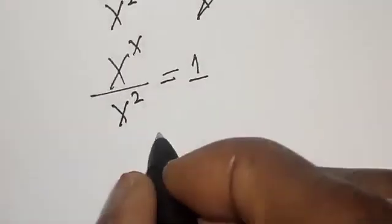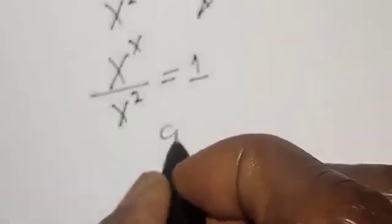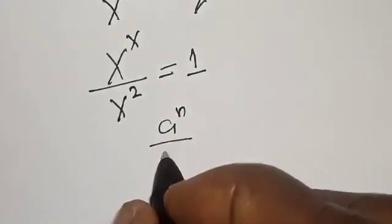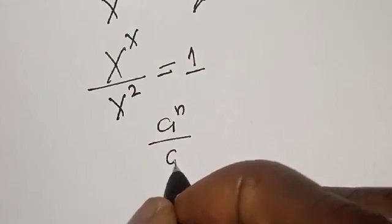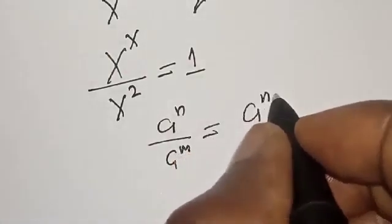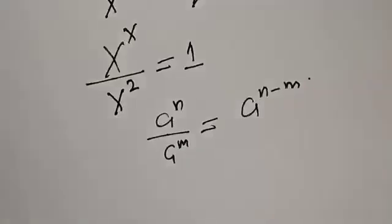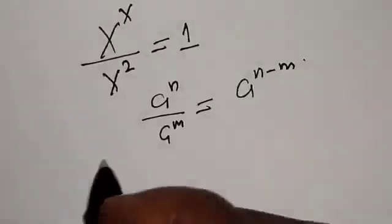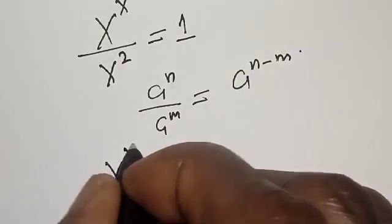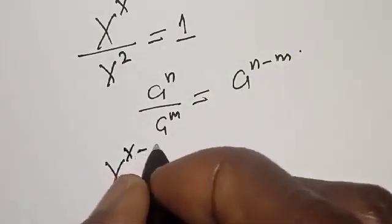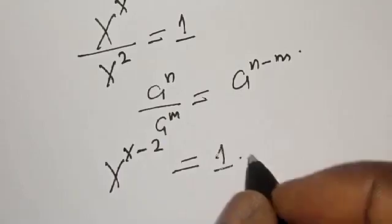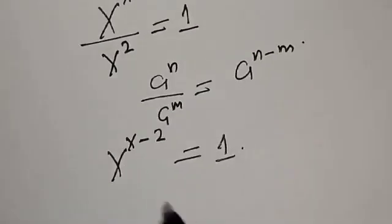Now remember that if you have a raised to power n over a raised to power m, this is the same thing as a raised to power n minus m. Then our left hand side becomes s raised to power s minus two is equal to one.